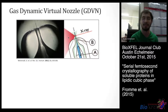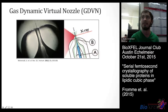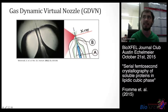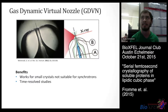We have our gas dynamic virtual nozzle, which is what actually injects the liquid into the path of the laser. As you can see here, we have our liquid stream flowing — letter A, or the blue stream — and it is focused by a coaxial gas shown in green as B. This forces the liquid stream to become a liquid jet that extends into the vacuum chamber. A benefit is that it works for small crystals not suitable for synchrotrons, and it is useful for time-resolved studies — you can irradiate your sample with a laser upstream and see how light or another substance affects your protein over a very short time scale.